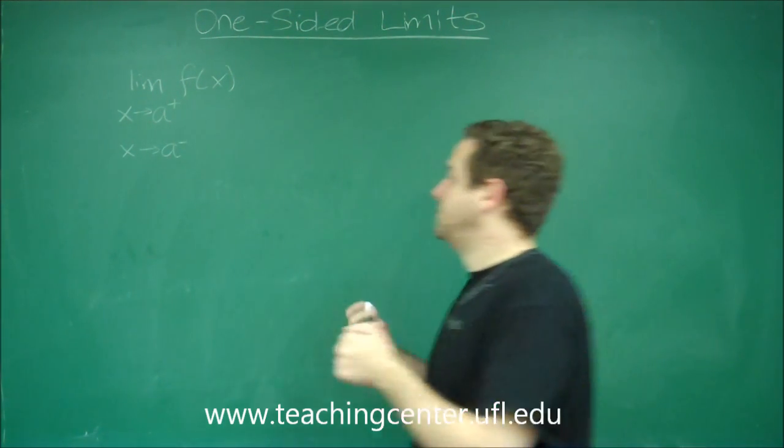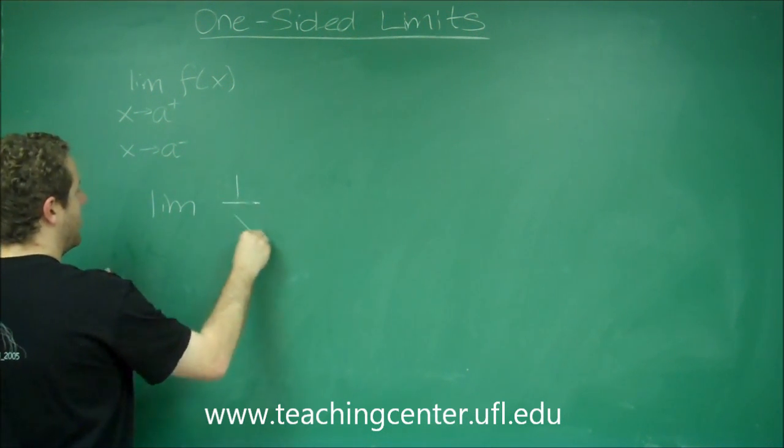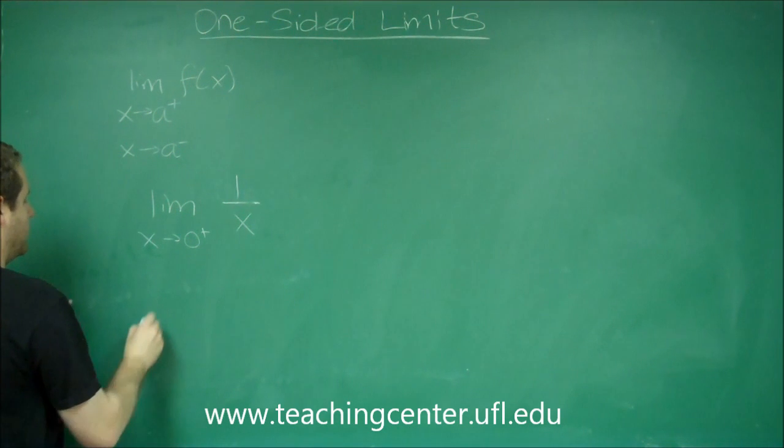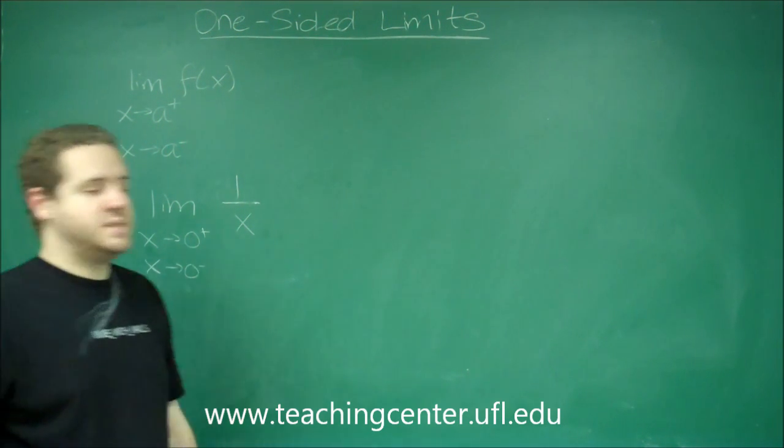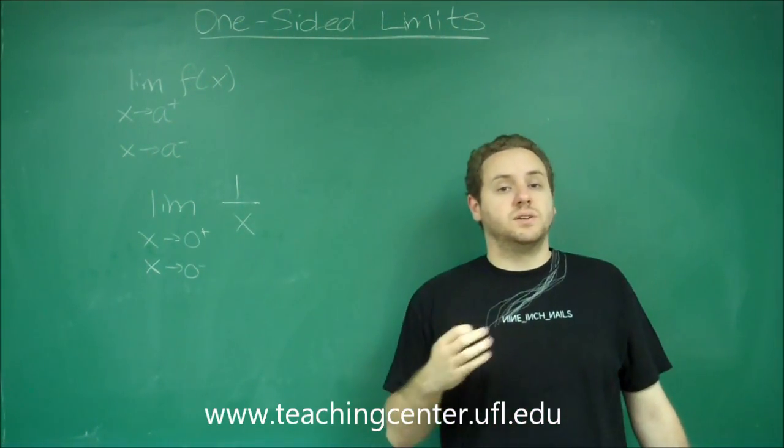However, let's look at an example. Limit of one over x as x approaches zero from the right, and let's do the same thing as x approaches zero from the left. So now we cannot just plug in zero because that would make this function undefined.